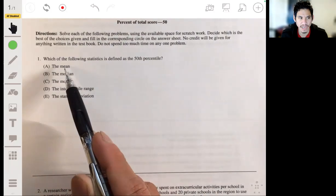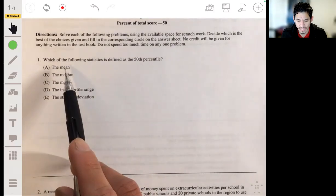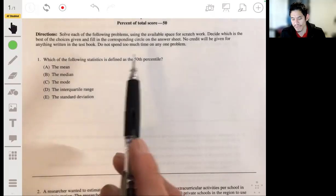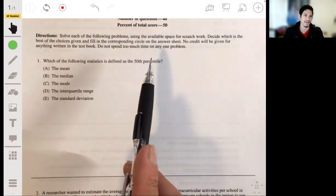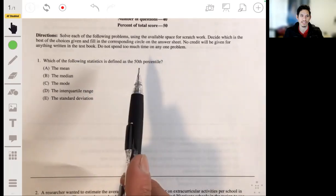The mean is the arithmetic average - add all numbers up, divided by the total number of data points. Sometimes the mean could be the 50th percentile, but by definition it's not. Sometimes it could be equal to the median. The median by definition is the 50th percentile.